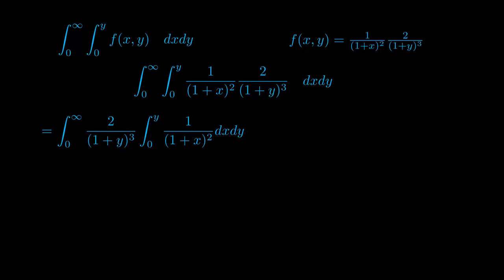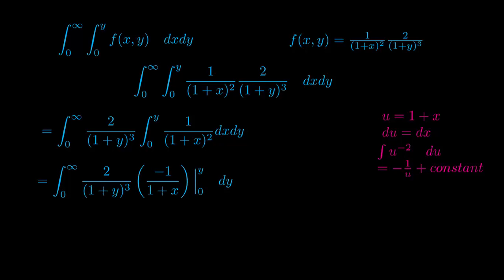There are multiple ways to solve this integral. You could use u as 1 plus x and du equals dx. When you take the derivative, that's what you end up with. When you integrate u to the negative 2, you end up with 1 over u. Since you have bounds or limits, you don't have to worry about the constant.